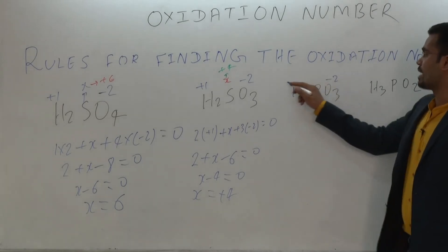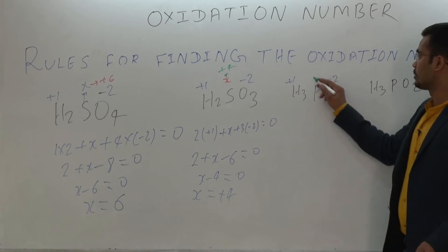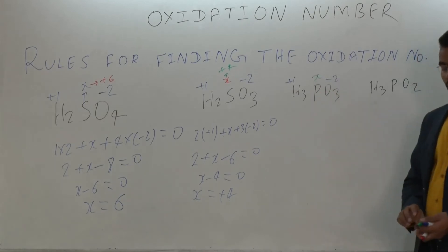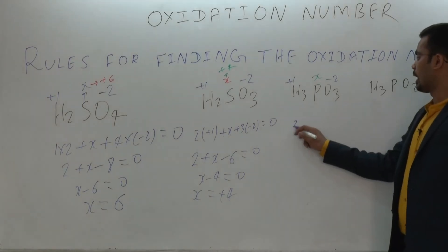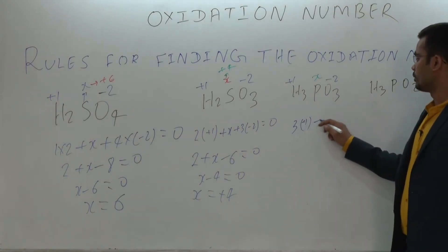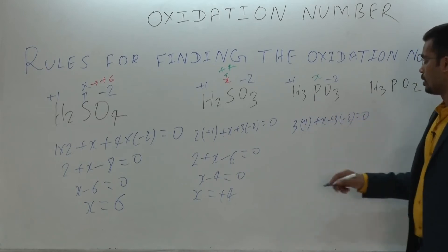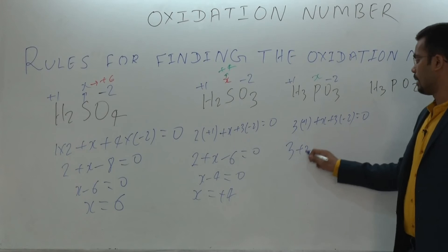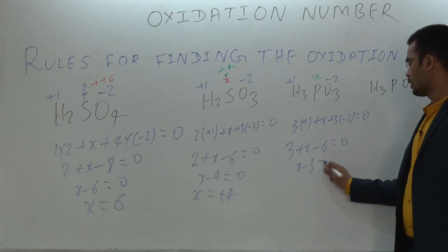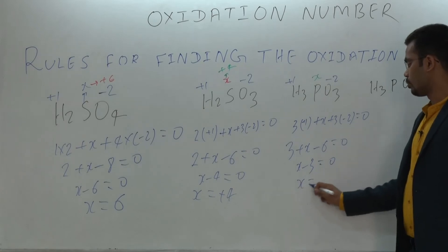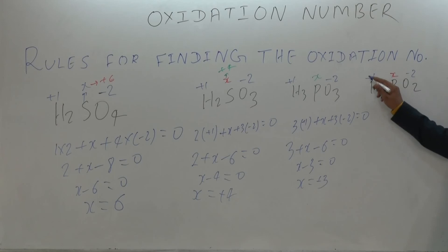For H₃PO₃, oxygen has −2, hydrogen has +1, and phosphorus is taken as x. So: 3×(+1) plus x plus 3×(−2) must equal 0. That gives 3 plus x minus 6 equals 0, so x minus 3 equals 0, therefore x equals plus 3. The oxidation state of phosphorus in H₃PO₃ is +3.